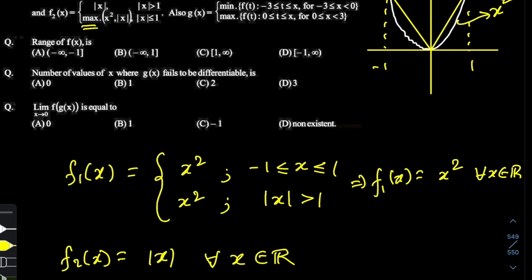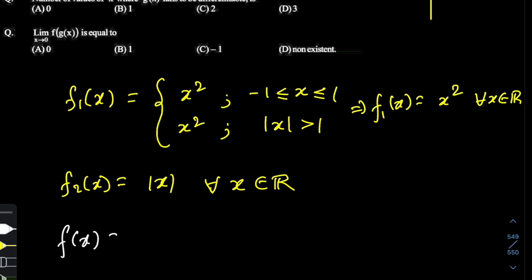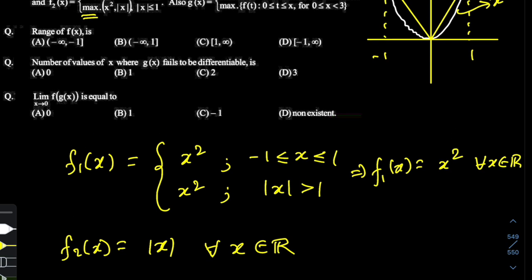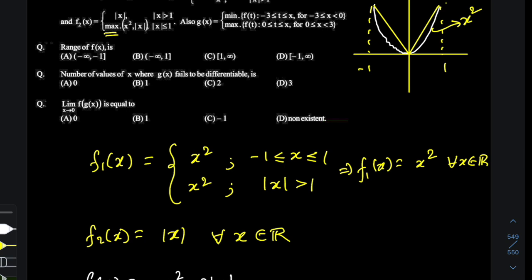Having found f1 and f2, it's time to find f(x). So f(x) = f1(x) − 2·f2(x), which means f(x) = x² − 2|x|. Now we've been given another function g(x): it takes the min of f(t) for t in [−3, x] when x is in [−3, 0], and the max of f(t) for t in [0, x] when x is in [0, 3]. This is the most intimidating part of the problem, but I'll make it very easy to understand by first looking at how f(x) behaves graphically.